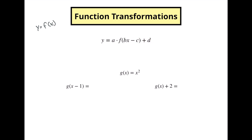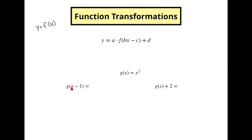We're going to start with our c and d values. We've got g of x defined as x squared, and we want to see what happens if we've got g of x minus one or g of x plus two. The idea of substituting something into a function — what we're saying here is we want to substitute x minus one into this function, so for every x we substitute x minus one, giving us x minus one squared. The other case is adding something onto the end, which looks like x squared plus two.